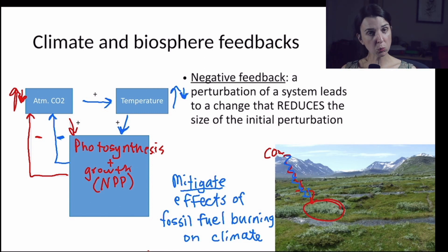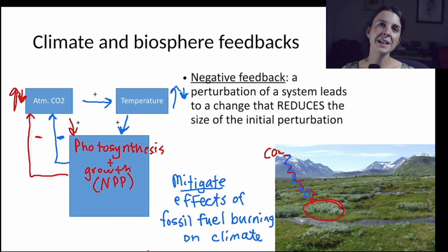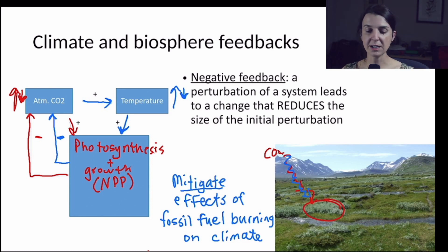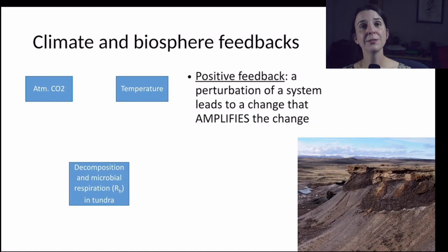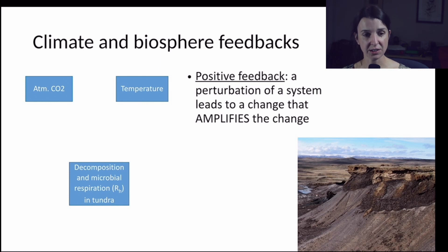Climate still gets warmer and atmospheric CO2 levels still go up in response to burning fossil fuels, but just not as much. So this is good for us. These negative feedbacks between ecosystems and climate are helpful because we don't want the climate to change that much. However, negative feedbacks are not the only feedback with climate that we expect to see in the tundra.